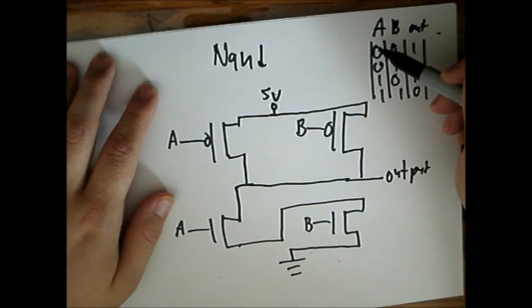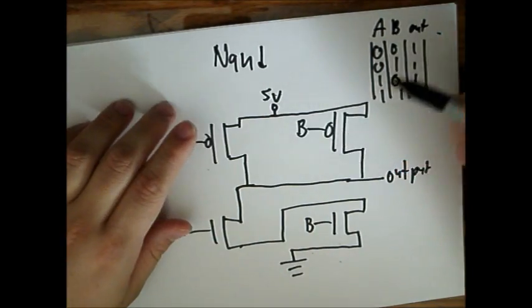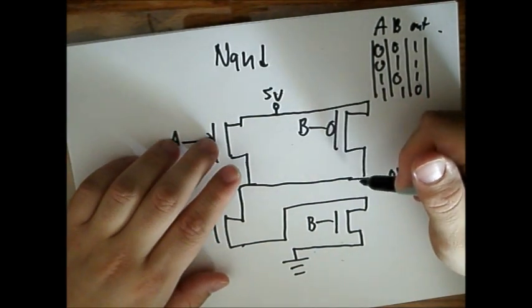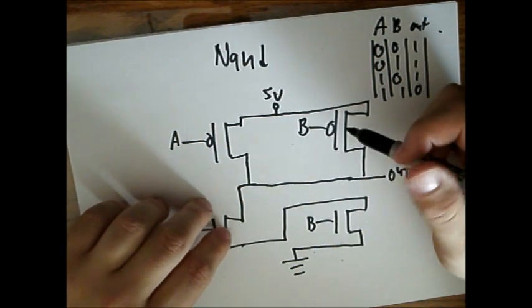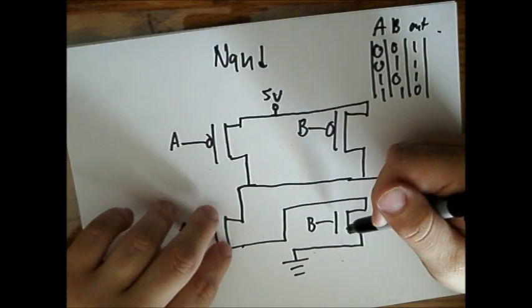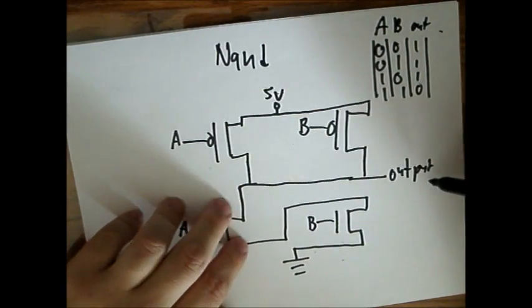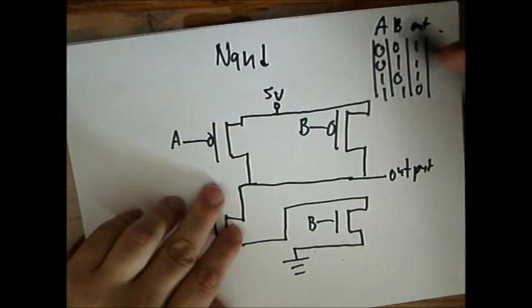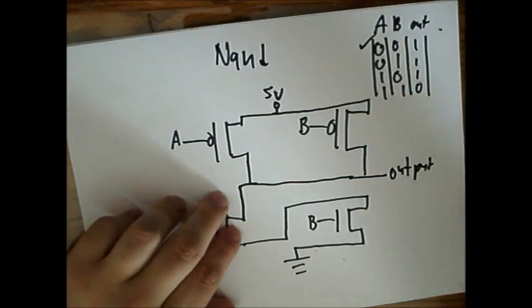So when A and B are both 0, these connections are both made. Outputs 1 from the 5 volts, and these connections are—I'm sorry, these switches are closed, these connections are open. Therefore output's 5 volts and not ground. Therefore it's 1.